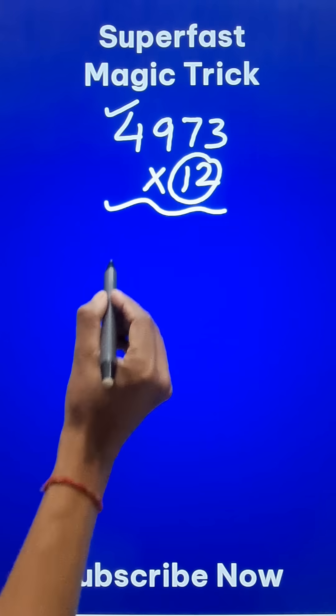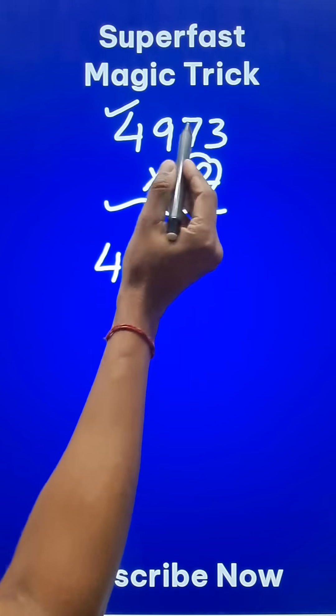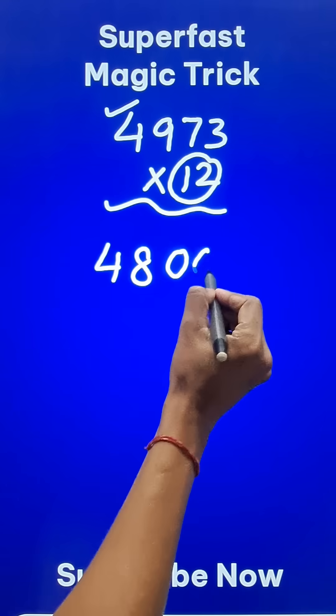Let's do 12 times 4. It is 48, right? Now how many digits are after 4? 1, 2, 3. So just put 3 zeros.